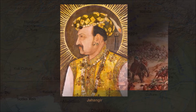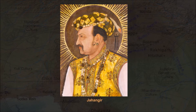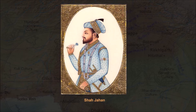Akbar's son Jahangir had furthered the size of the Mughal Empire through conquest, yet left much of the state bankrupt as a result. Jahangir's son Shah Jahan, who reigned 1628–1658, was known for his monuments, including the Taj Mahal.